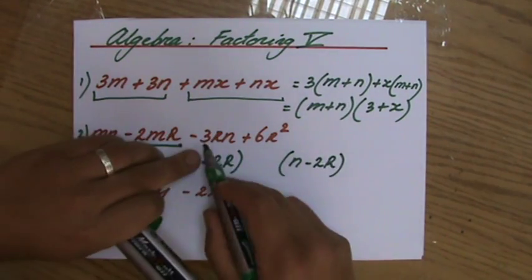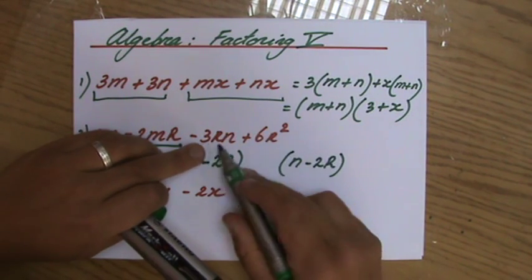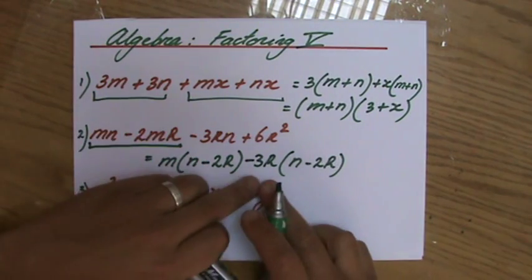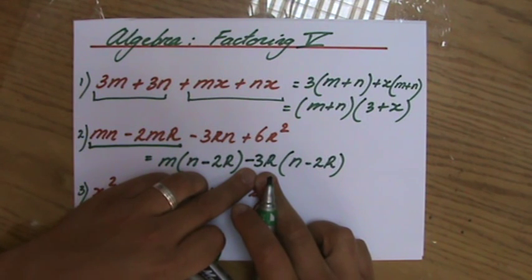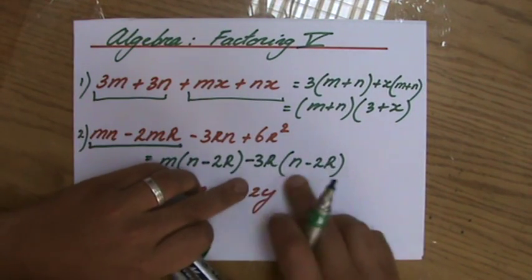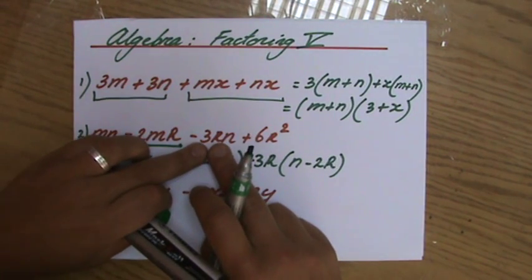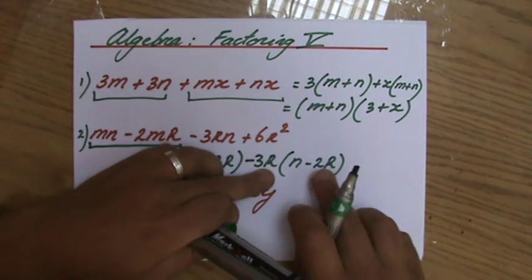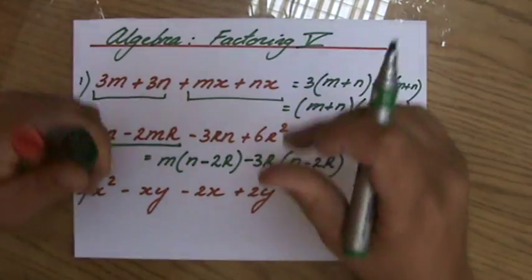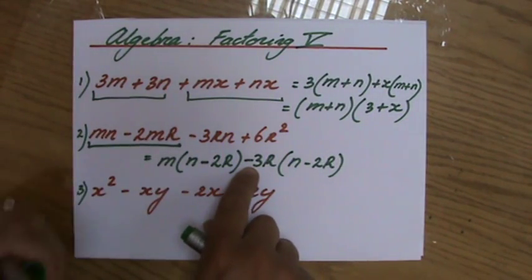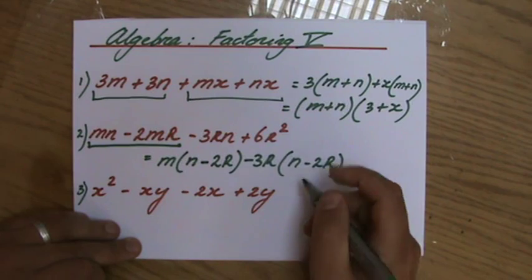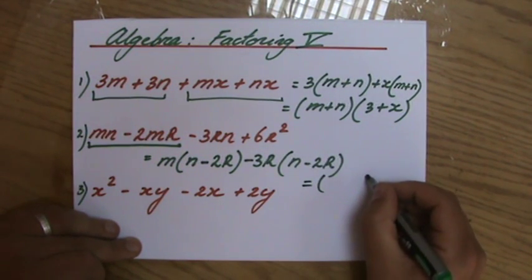Because what is this common factor here? An r and a 3. But you've got to take out the minus 3r. Why is that? Because if I take out minus 3r, yeah, and then I can put n minus 2r inside my brackets. Does that make sense? Because let me just expand this quickly for you. Minus 3r times n is minus 3rn. And minus 3r times minus 2r is positive 6r squared. Okay? And it's important, again, that you take out the minus 3r and not a positive 3r. Why? Because inside my brackets here needs to be the same as inside my brackets there. For it to work, yeah, factorizing it by grouping.